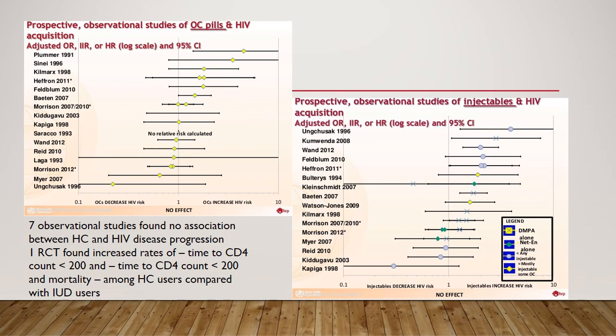Seven observational studies found no association between hormonal contraceptive use and HIV disease progression. One randomised controlled trial found increased rates of time to CD4 count less than 200 and mortality amongst hormonal contraceptive users compared with intrauterine device users.